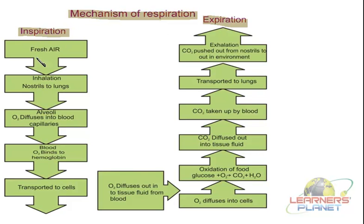During inspiration, fresh air from our surroundings is inhaled and taken inside through the breathing process. Initially there is a contraction of the muscles associated with the ribs as well as with the diaphragm. This contraction increases the thoracic cavity, and thus air is filled inside the alveoli, resulting in the expansion of the lungs. This is how air is taken inside the lungs from the surroundings through the nostrils.